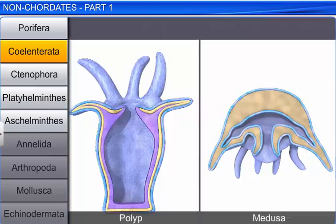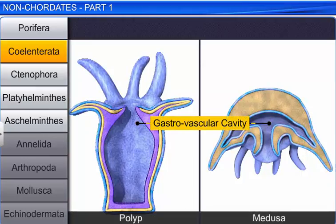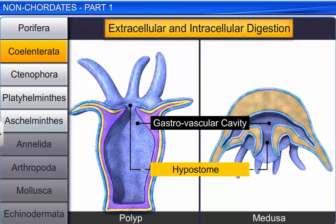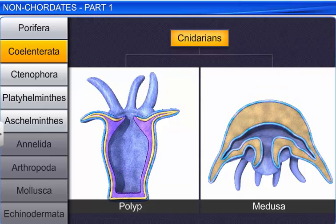Coelenterates have a central gastrovascular cavity with a single opening called the hypostome. Digestion in them is both extracellular and intracellular. Coelenterates exhibit two basic body forms: polyp and medusa.